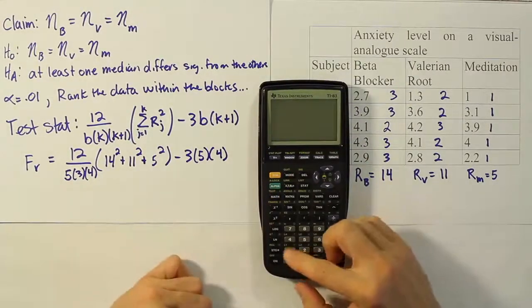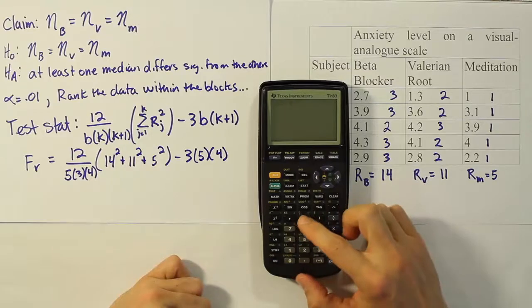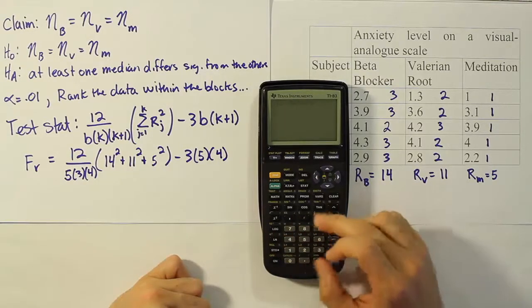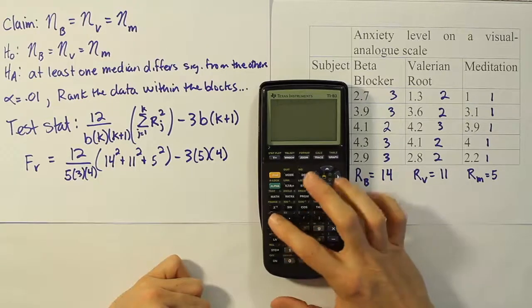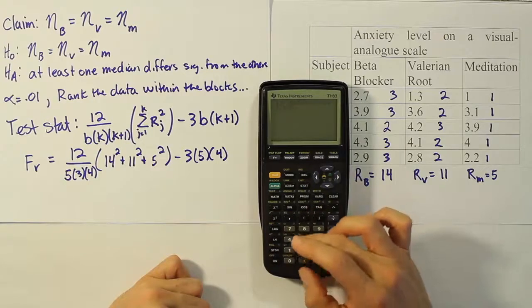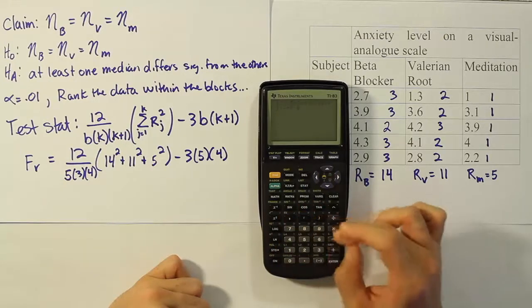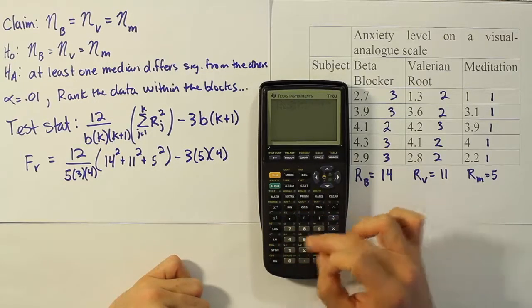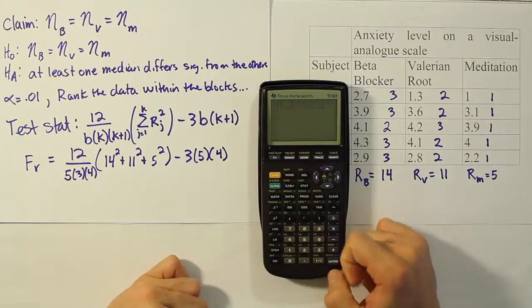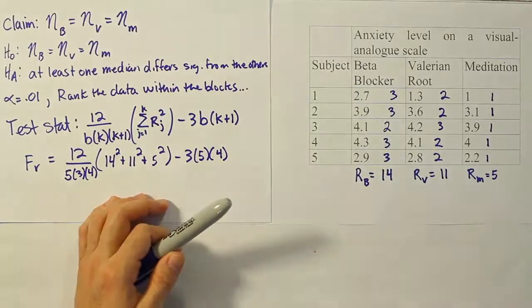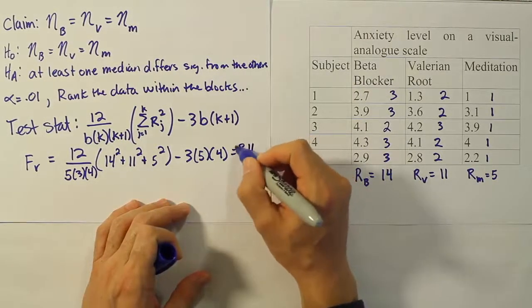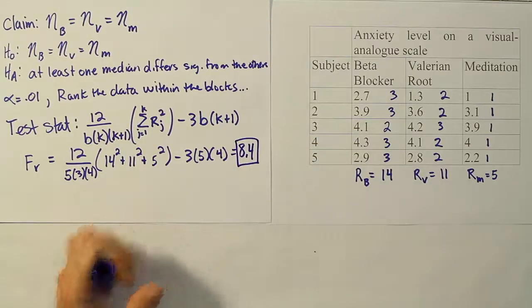Let's work that out on our calculator and see what it gives us. So we'll have 12 divided by 5 times 3 times 4, times 14 squared plus 11 squared plus 5 squared, minus 3 times 5 times 4. After entering all of that in there, we get the answer 8.4. So there's our Friedman test stat.